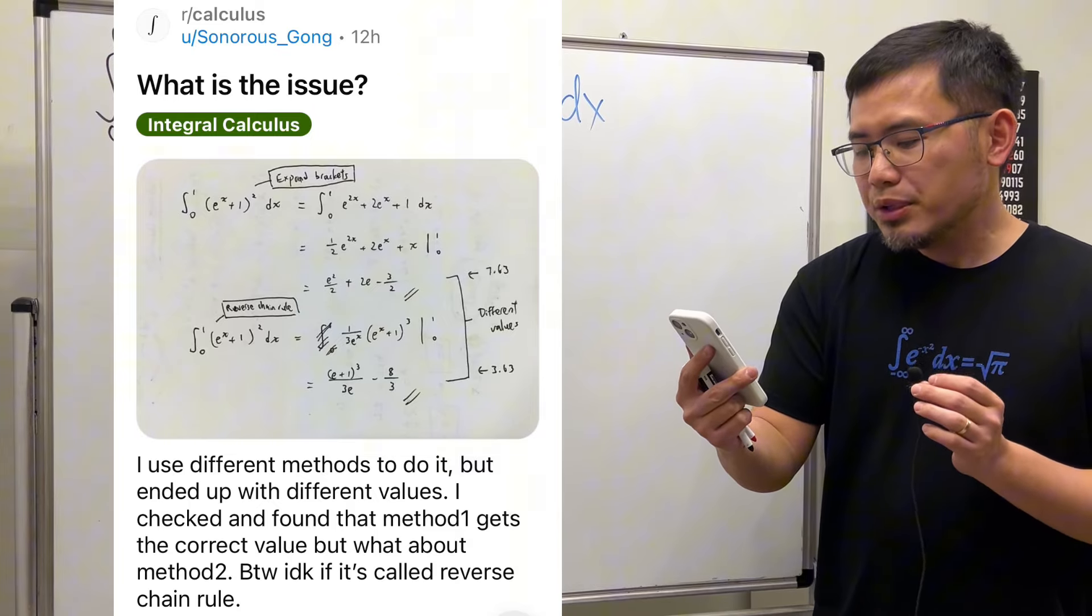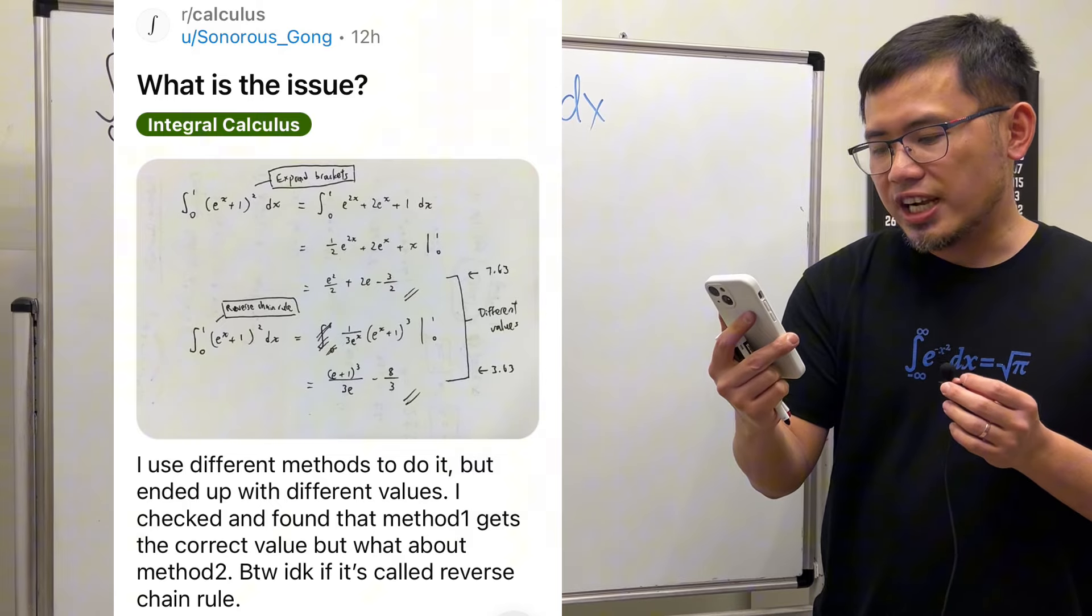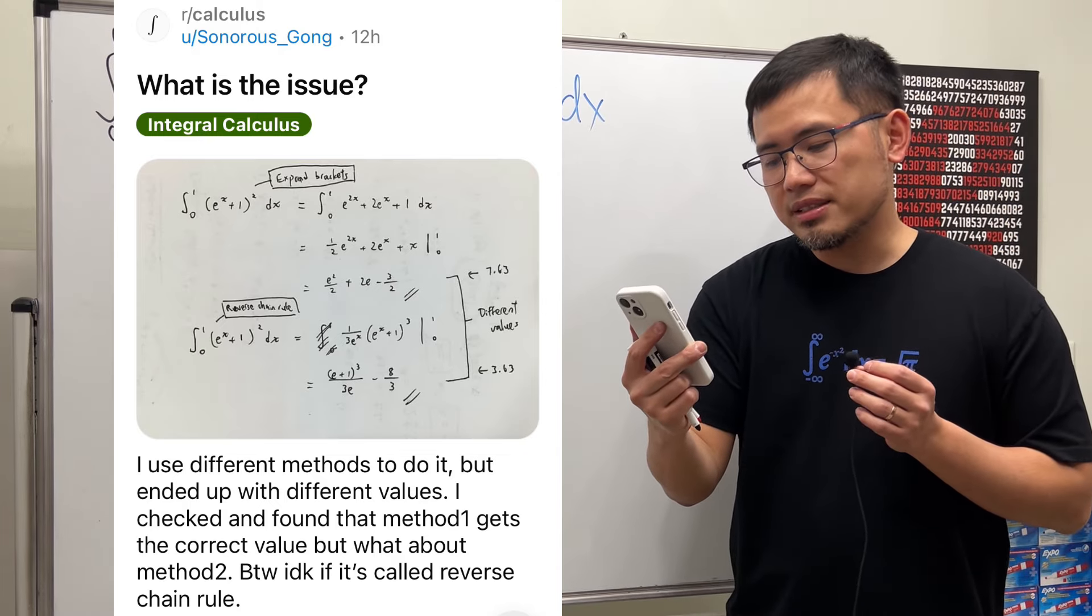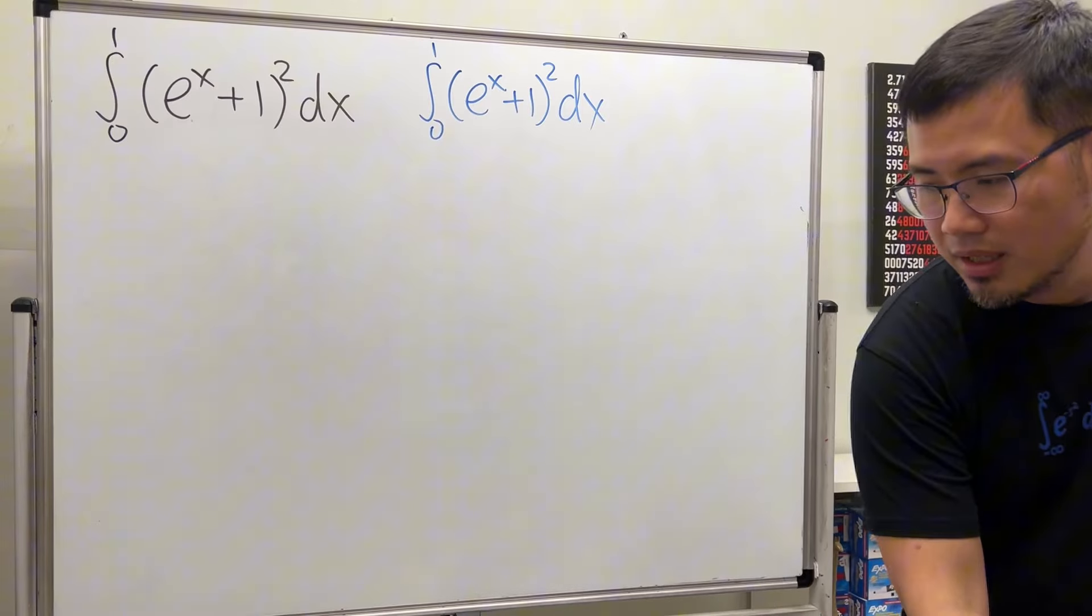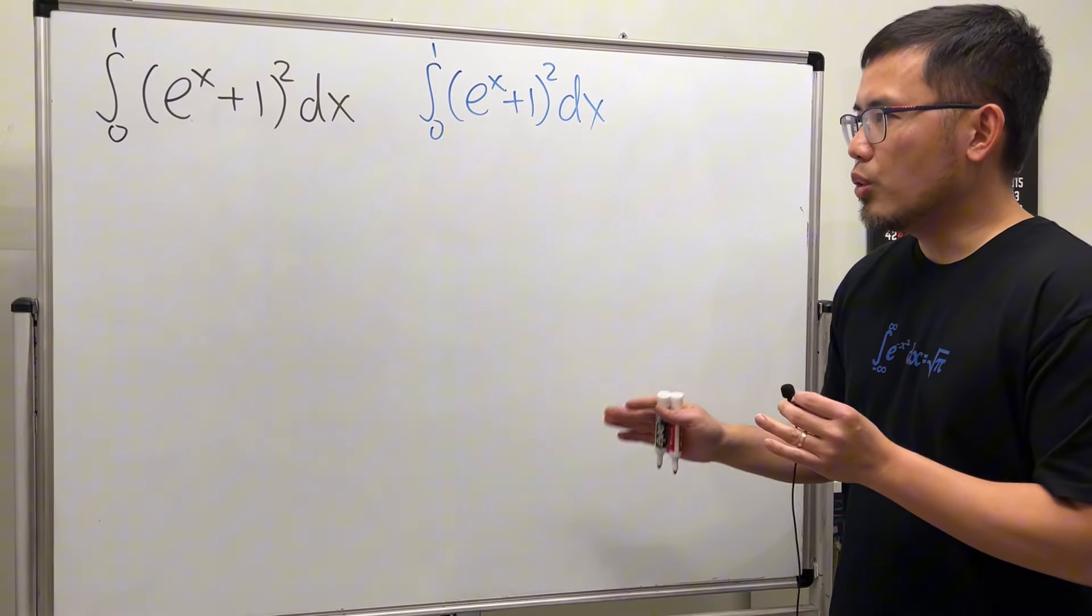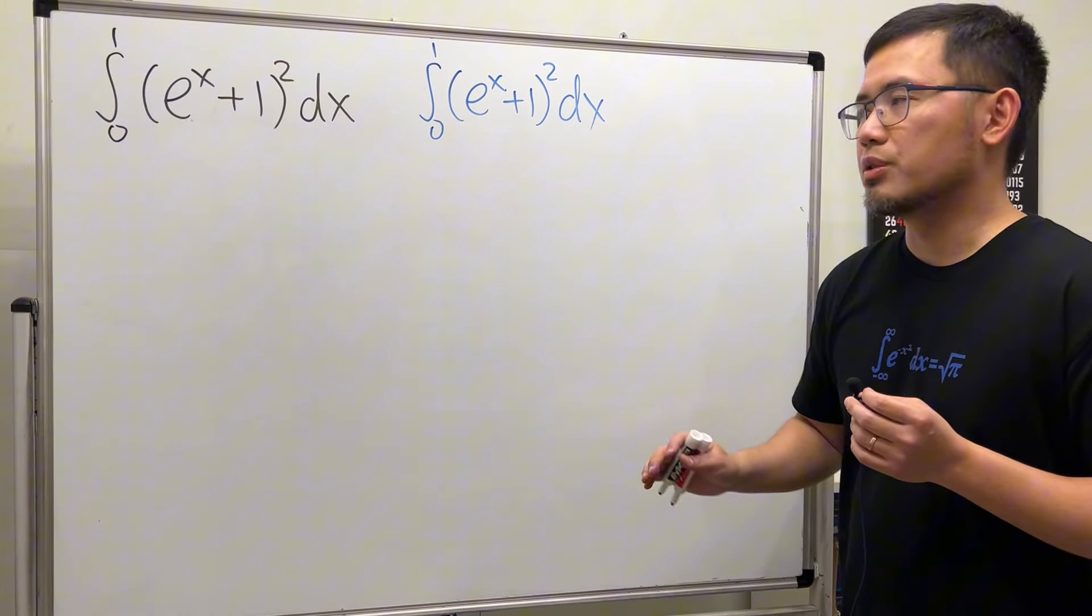What is the issue? I use different methods to do it, but end up with different values. I checked and found that method 1 gets the correct value, but what about method 2? So let's go ahead, go over both methods first, and I'll talk about why the second method is incorrect.